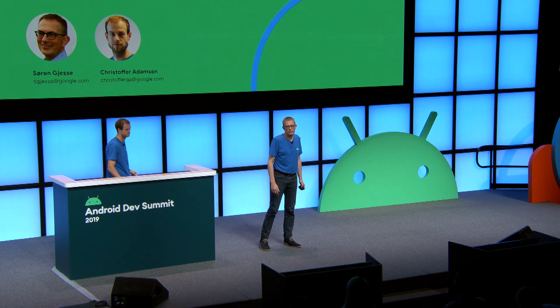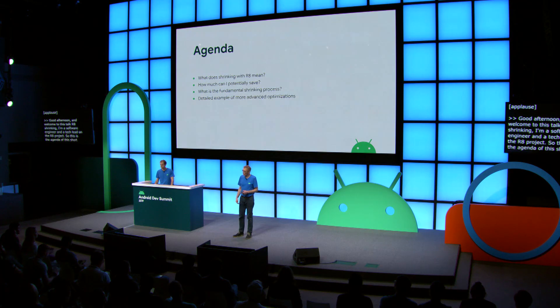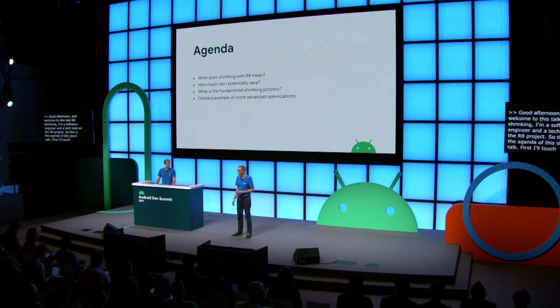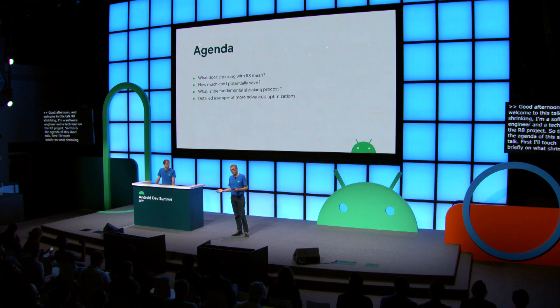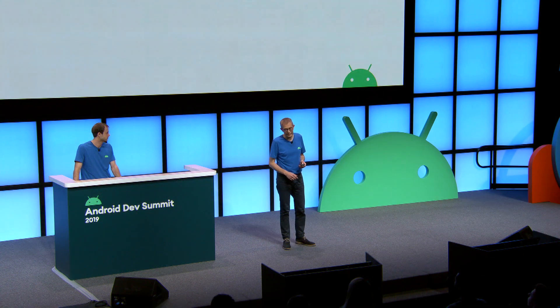Good afternoon, and welcome to this talk on R8 Shrinking. My name is Søren Giese. I'm a software engineer and tech lead on the R8 project. This is the agenda: first, I'll talk briefly about what shrinking means from an R8 perspective, followed by what you can potentially save by using R8. Then I'll give an overview of how the shrinking process works and how it's configured in Android Studio. Then Christopher Adamson will give a detailed rundown of one of our more advanced shrinking algorithms.